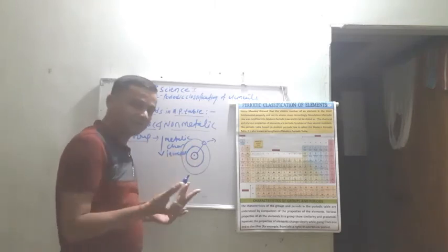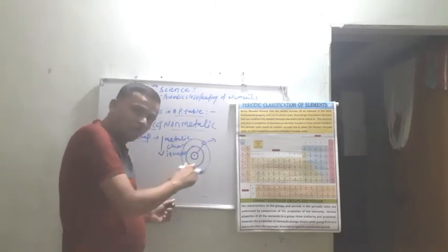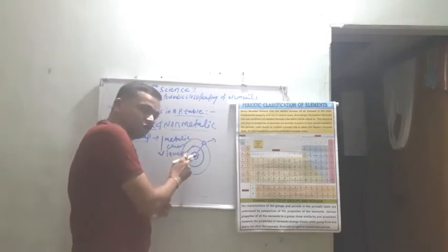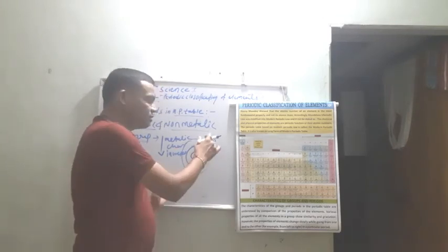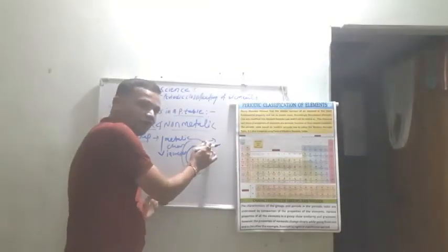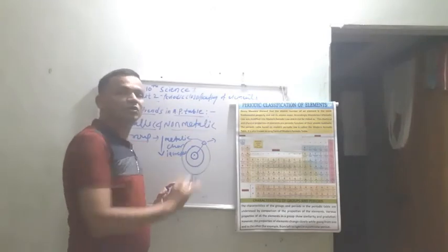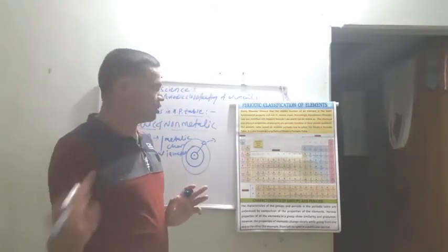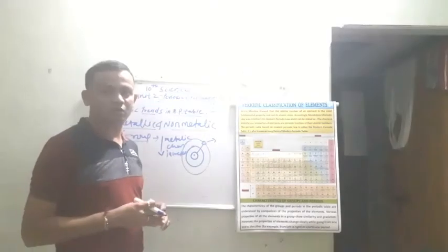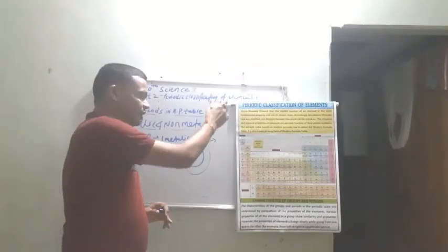Why does this happen? Because while going downwards, the number of orbits increases, and therefore the distance between the nucleus and valence electrons increases. As a result, the attractive force between the valence electron and the nucleus decreases, and the atom can easily lose electrons. The element forms cations, so electropositivity increases and metallic character increases.